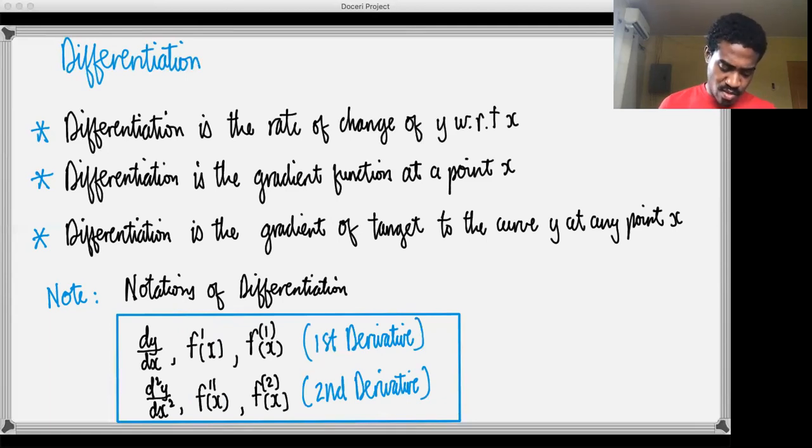And also this one isn't that common but f₁ of x where you have the one just symbolizing that's the first derivative and then f₂ of x, the two just symbolizing that is the second derivative. So that's another notation that could come up. So just make sure you familiarize yourself with it.